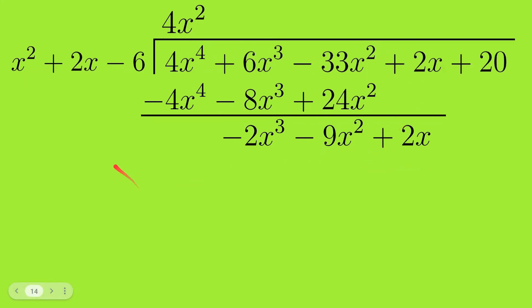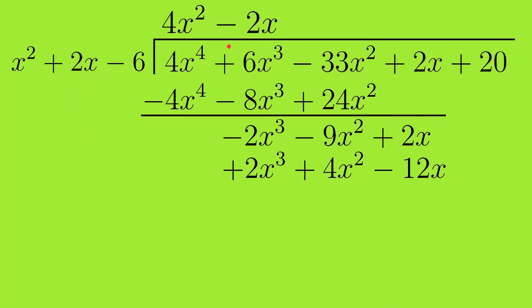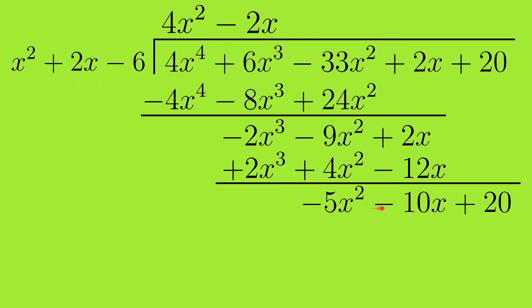Now, x² times what gives minus 2x³? That is minus 2x. We write minus 2x in the quotient and multiply minus 2x by (x² plus 2x minus 6), giving minus 2x³ minus 4x² plus 12x. Switching signs gives plus 2x³ plus 4x² minus 12x. After subtracting, we are left with minus 5x² minus 10x, and plus 20 comes down.